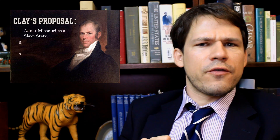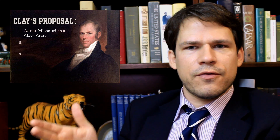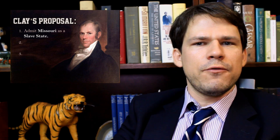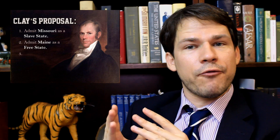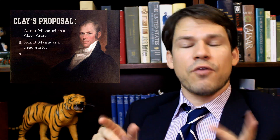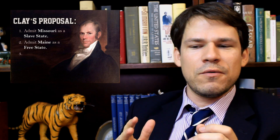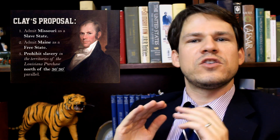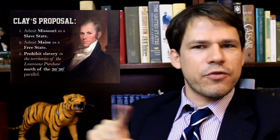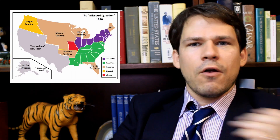Clay's proposal: admit Missouri as a slave state. But wait — here's the rest. With the consent of a state, Congress can divide it into two states. So Maine, which had been part of Massachusetts, would be admitted as a separate free state — restoring parity between slave and free states. And there's more: Clay proposed drawing a line through the Louisiana Purchase at 36°30', prohibiting slavery north of that line.